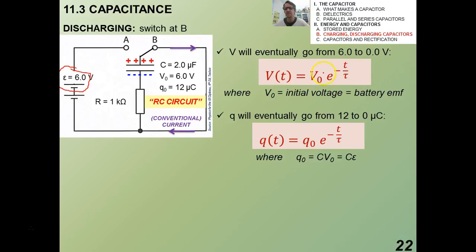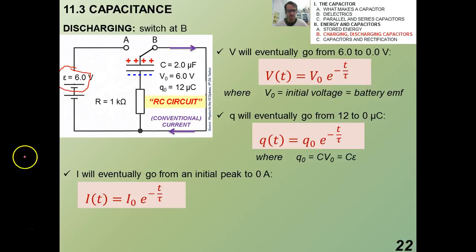Notice that the only difference between them is that when charging, we had this term 1 minus e to the negative T over tau, now it's just e to the negative T over tau. Now, the current will eventually go from an initial peak to 0 amps. So that would be an exponential decay, and that's given by I of T equals I naught e to the negative T over tau.